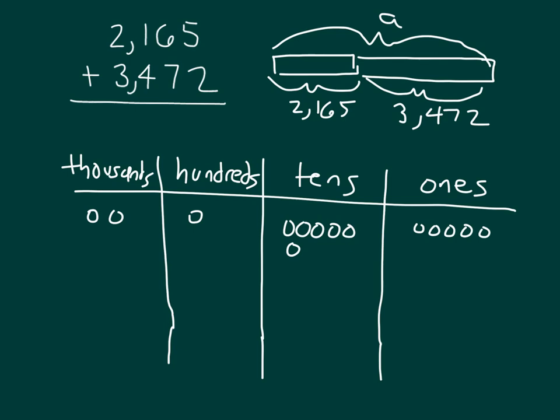Next, we'll model 3,472. Notice where it is that I am placing this number. On the lower part of the place value chart, that's 2 ones, 7 tens, 4 hundreds, and 3,000s.